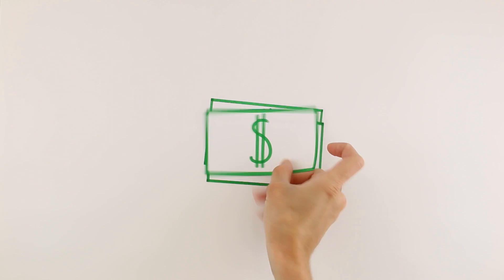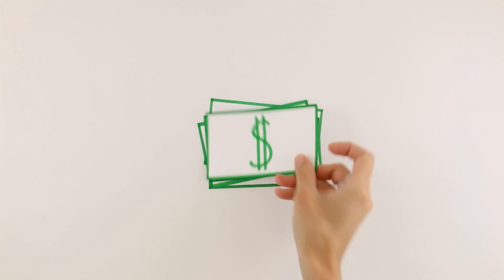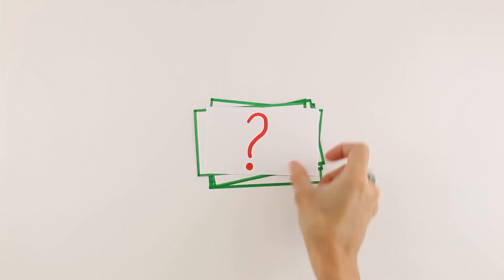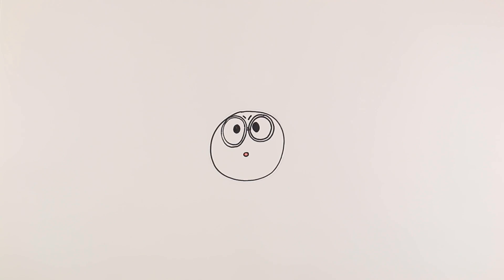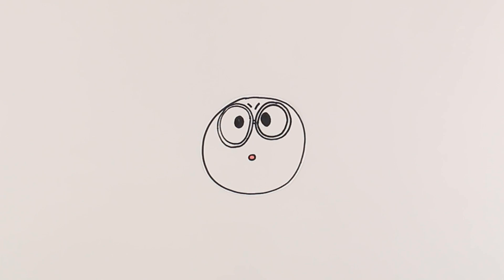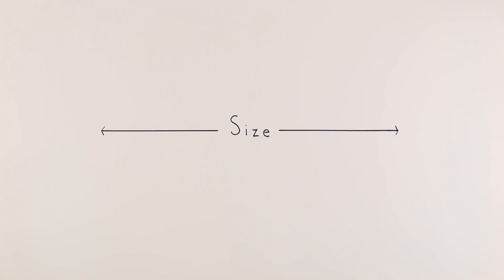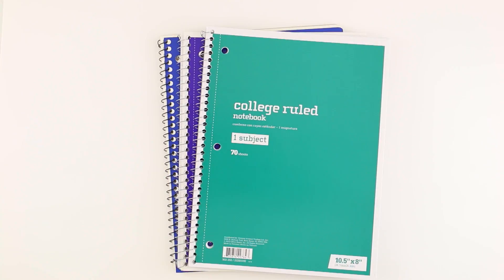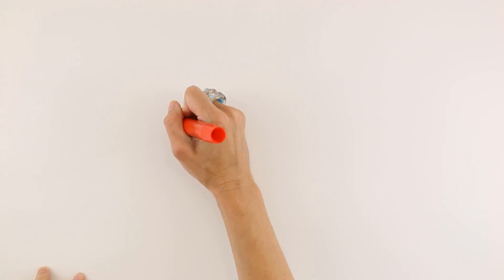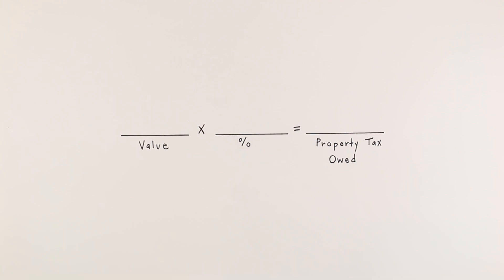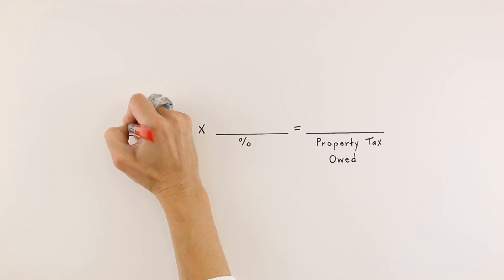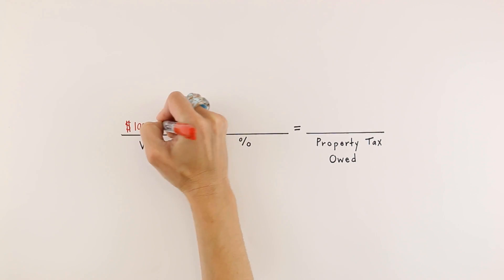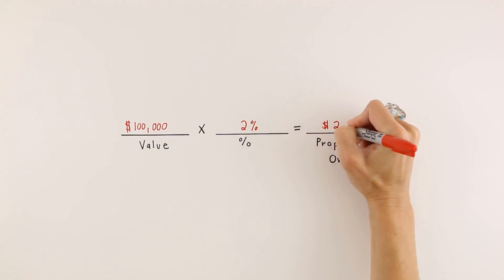To determine how much tax should be levied on a particular piece of property, the government sends out an assessor to examine the property's worth. They take into account size, location, reference materials, and past experience when determining a property's value. A percentage of that value is levied as property tax.